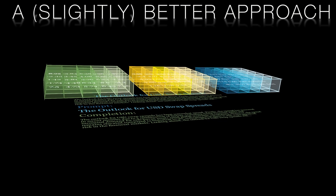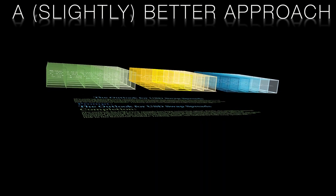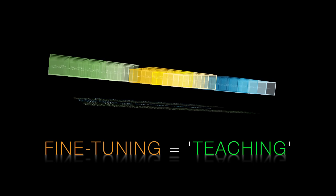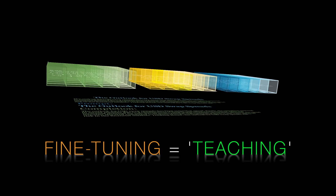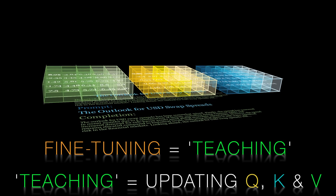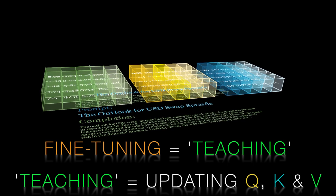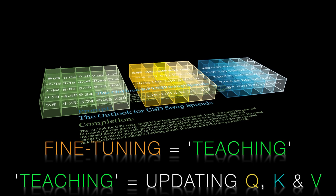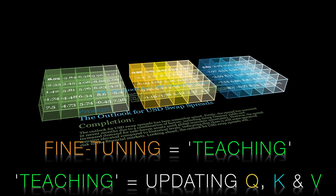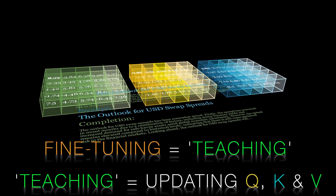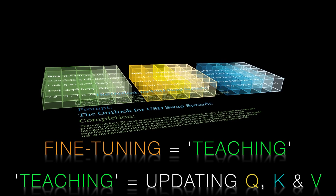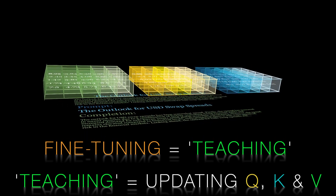When we fine-tune a transformer we're teaching it new stuff. When we teach it new stuff, it learns. The manifestation of that learning are updated weights in the query, key and value matrices. If you're unfamiliar with the concept of attention, query, key and value matrices, please click on the link in the description or the pop-up on your screen.